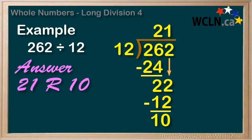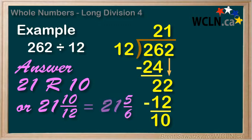Or we can write it as 21 and 10 over 12. Or we can notice that we could reduce down that 10 over 12 and write our answer as 21 and 5 over 6.